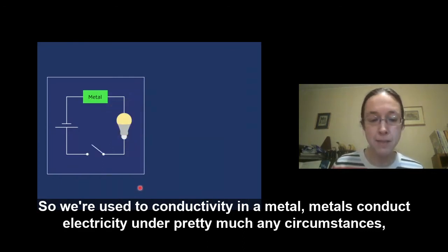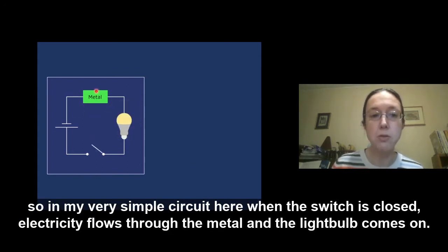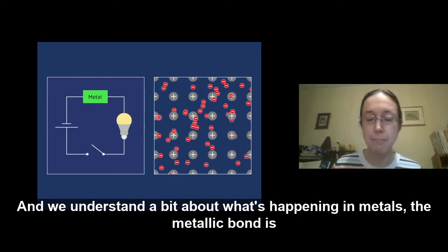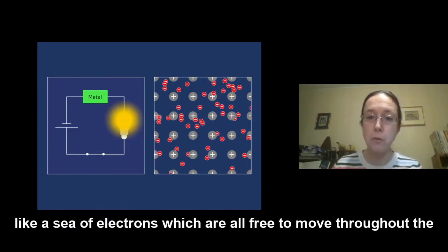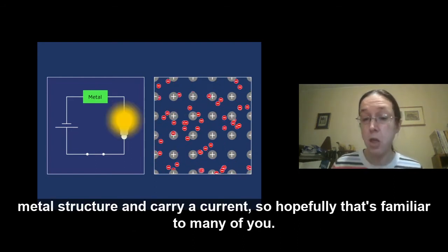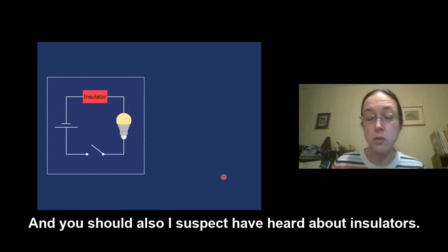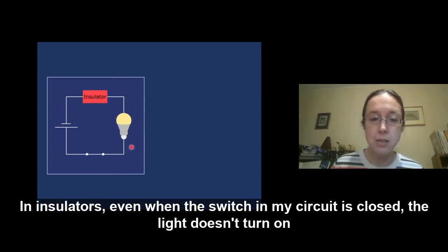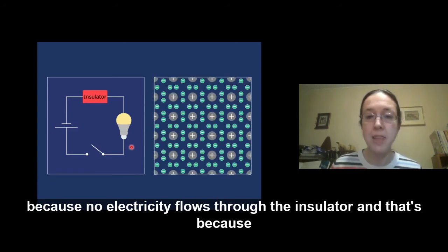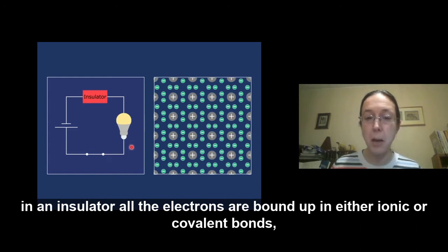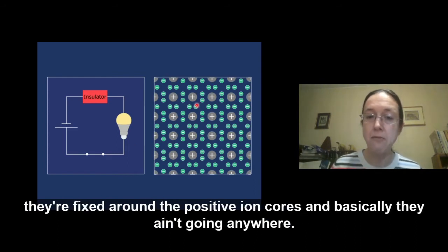So we're used to conductivity in a metal. Metals conduct electricity under pretty much any circumstances. So in my very simple circuit here, when the switch is closed, electricity flows through the metal and the light bulb comes on. And we understand a bit about what's happening in metals. The metallic bond is like a sea of electrons, which are all free to move throughout the metal structure and carry a current. So hopefully that's familiar to many of you. And you should also, I suspect, have heard about insulators. In insulators, even when the switch in my circuit is closed, the light doesn't turn on because no electricity flows through the insulator. And that's because in an insulator, all the electrons are bound up in either ionic or covalent bonds. They're fixed around the positive ion cores. And basically, they ain't going anywhere.